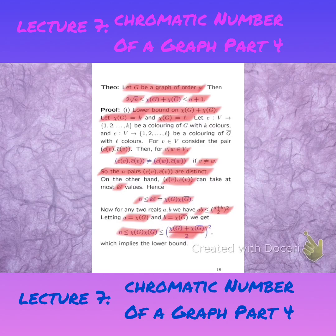It follows then that the sum between the two chromatic numbers is at least two times the square root of N.